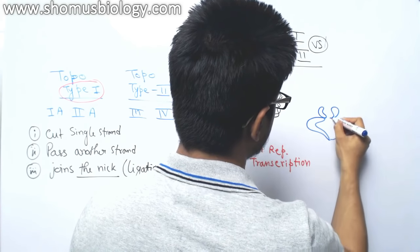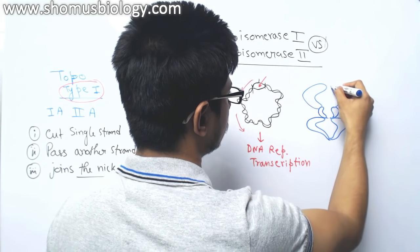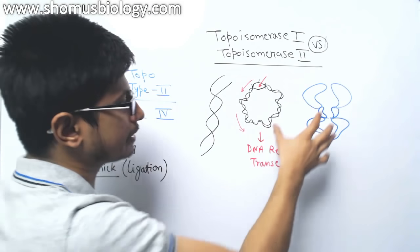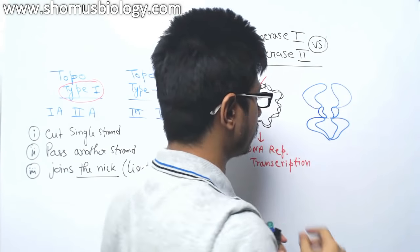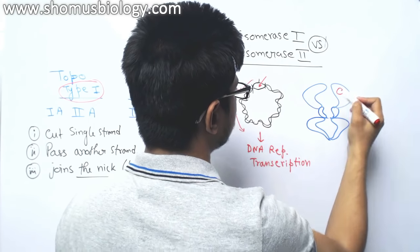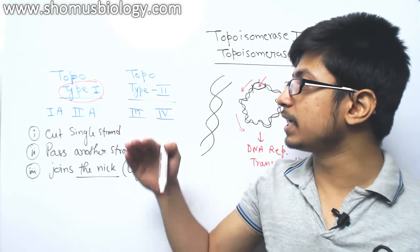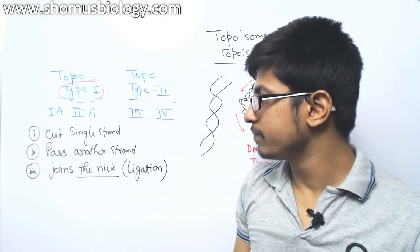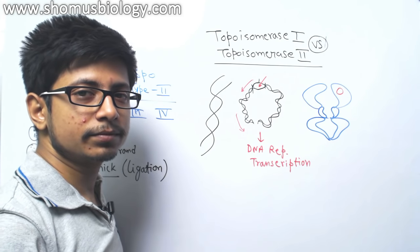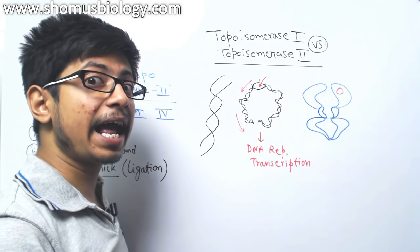Topoisomerase type 2 has a specific structure — two identical subunits joined together. There is a region called the ATP binding site and a DNA binding site. What this topoisomerase type 2, gyrase, does is it can cut both strands of the DNA and pass another double-stranded DNA through it, then re-join it.